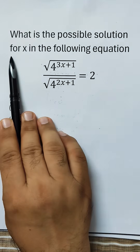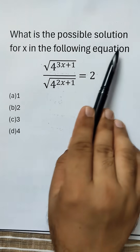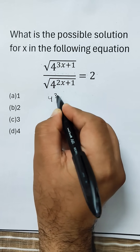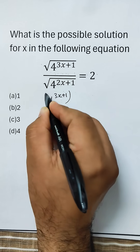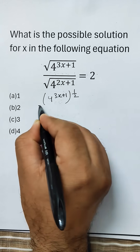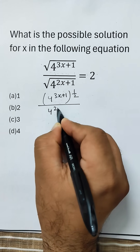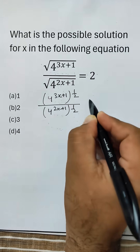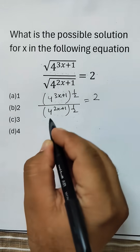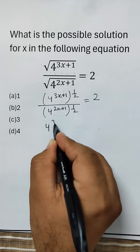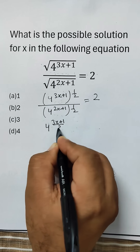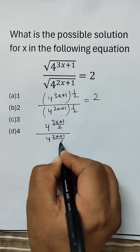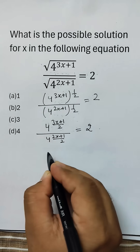What is the possible solution for x in the following equation? This can be written as 4 power (3x + 1) whole power 1 by 2, upon 4 power (2x + 1) whole power 1 by 2, is equal to 2. Further, this can be written as 4 power (3x + 1/2) upon 4 power (2x + 1/2) is equal to 2.